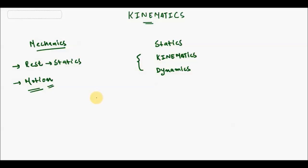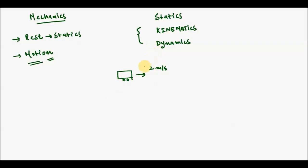For example, consider a car moving in a particular direction at a speed of two meters per second. In kinematics, we are interested in the speed, acceleration, and distance traveled by the object — but not the force that caused the motion. Therefore, kinematics equations are free from force.